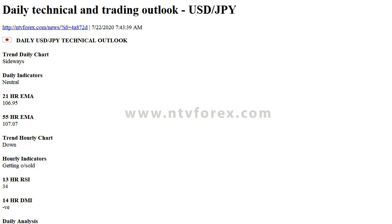Resistance: 107.78 (July 7 High), 107.53 (Monday's High), 107.04 (Monday's Low, now Residential Support). Support: 106.65 (July's Low), 106.39 (June 24th Low), 106.08 (June 23rd Low). USD/JPY: 106 Japanese Yen and 81 Sen.